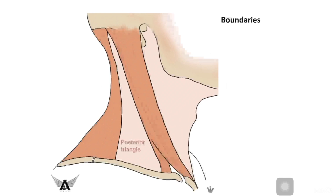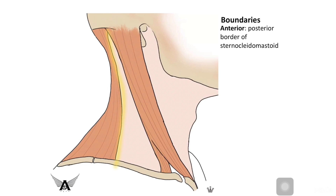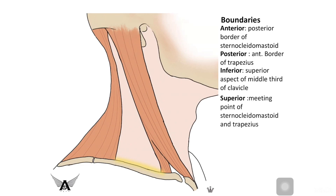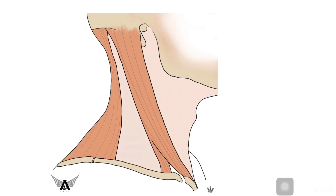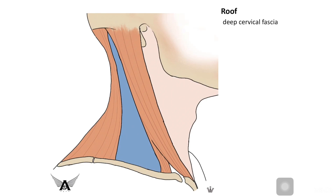The boundaries of the posterior triangle: anteriorly it is bounded by the posterior surface of the sternocleidomastoid, posteriorly by the anterior border of the trapezius, inferiorly by the middle third of the clavicle, and the apex is formed by the meeting point of the sternocleidomastoid and trapezius.